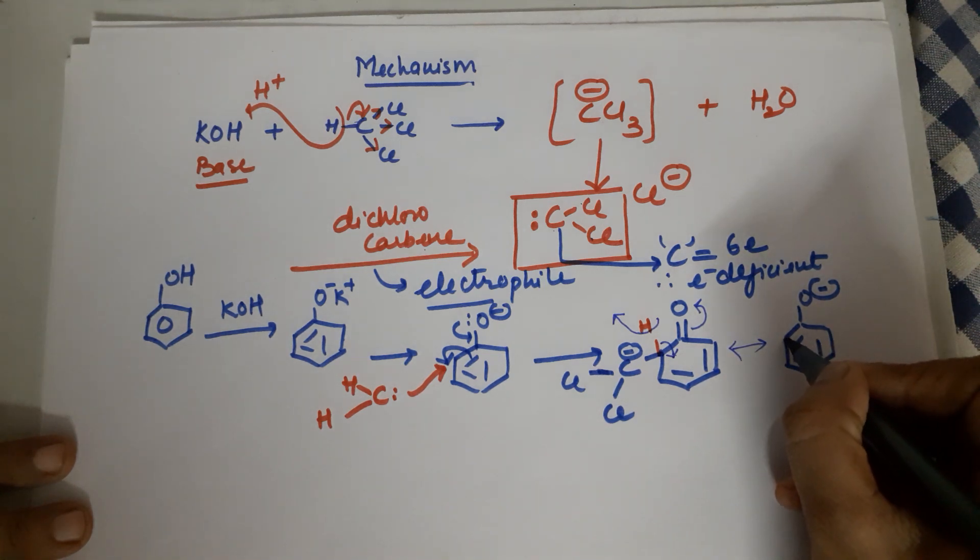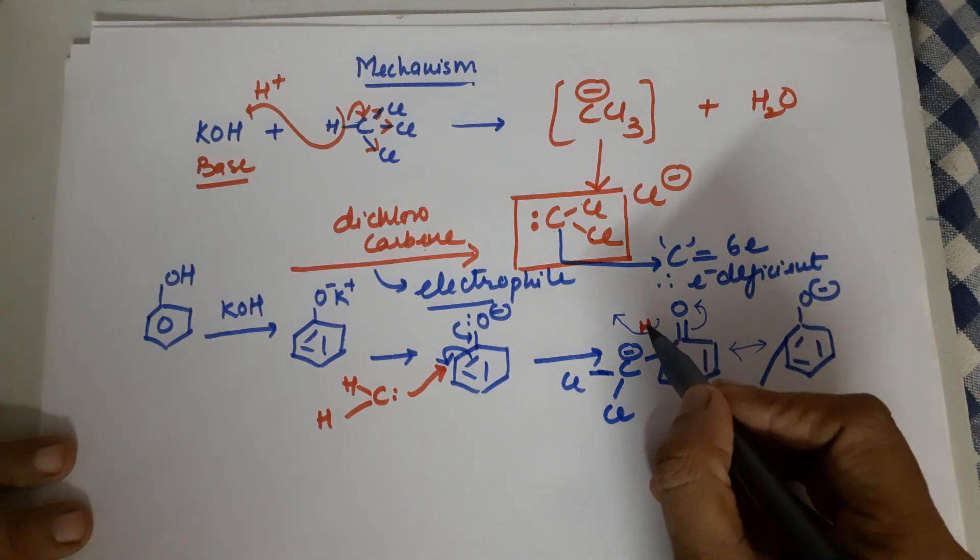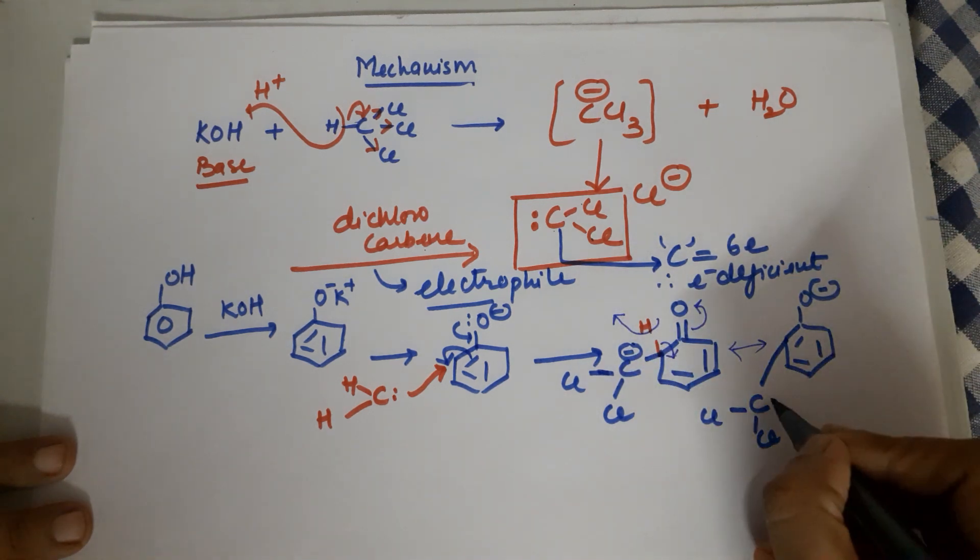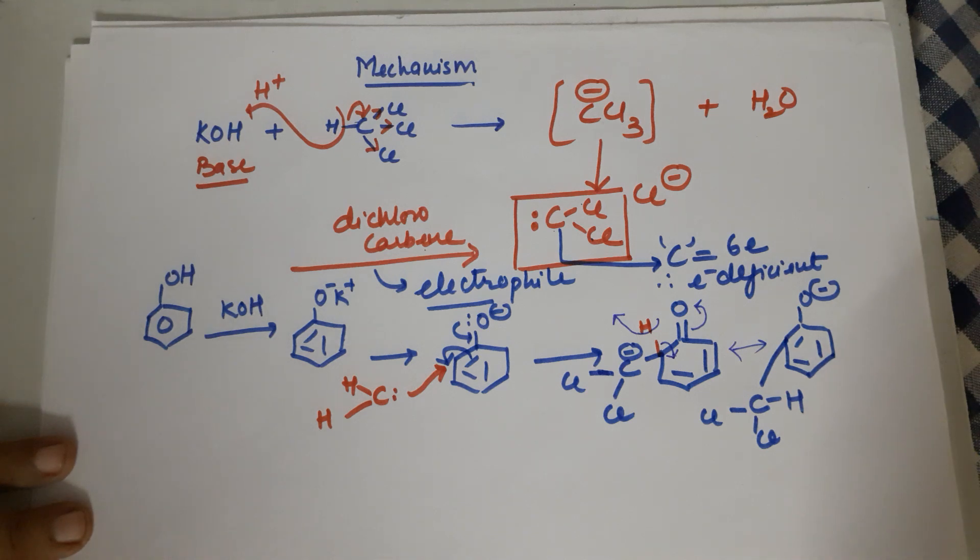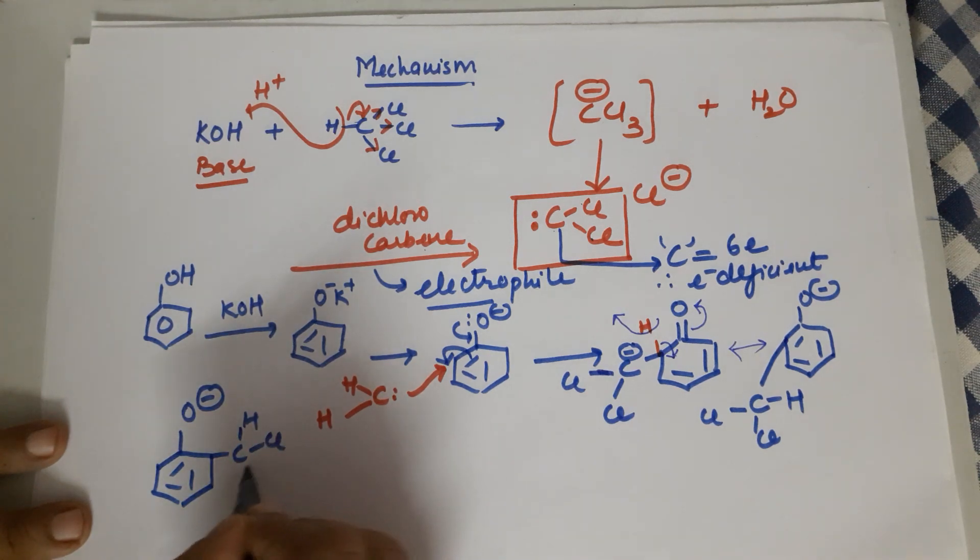While here what exactly happens? Your C has got two Cls and this H positive goes and attacks the carbon negative. So your H comes to this position. I am rewriting this product. Your benzene with the resonance complete. O minus. I am writing it on this side now. So you have CHCl2.